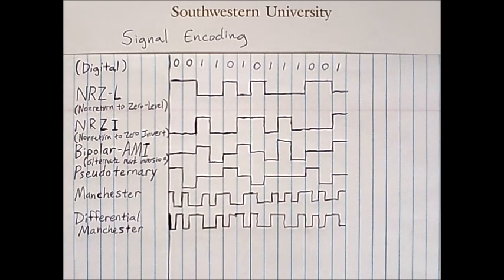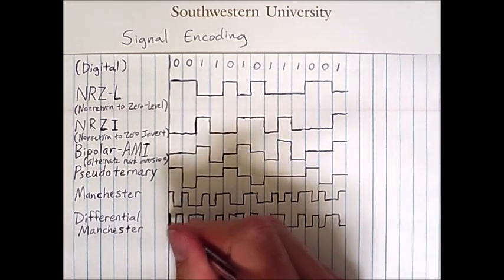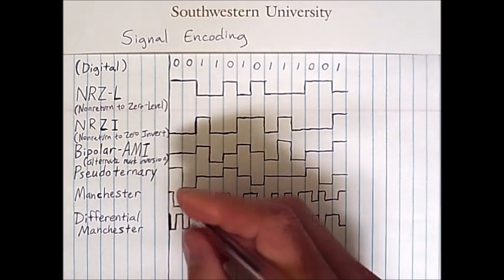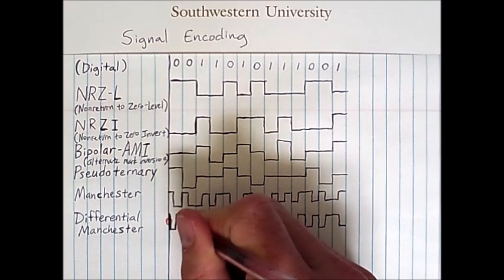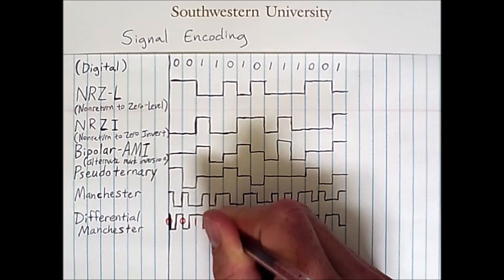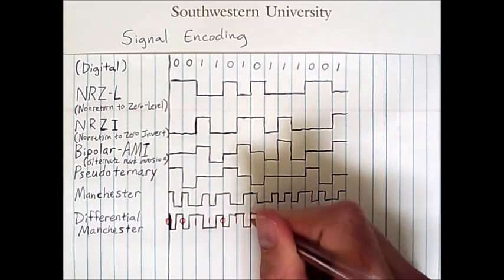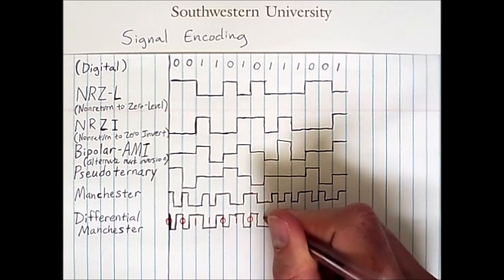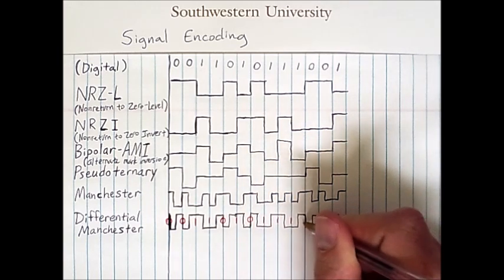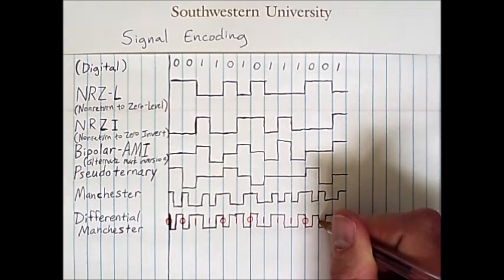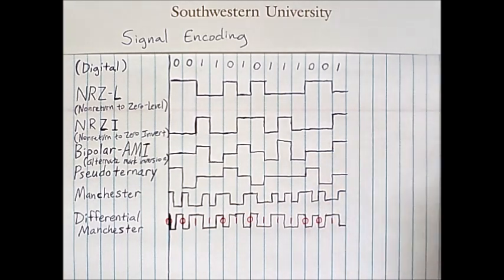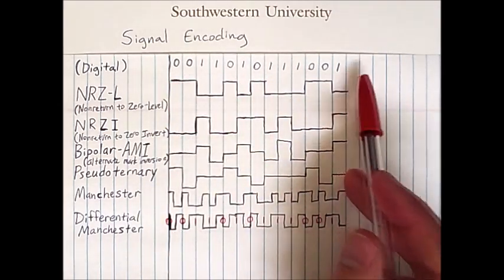To drive home how to visualize differential Manchester: whenever there is a transition at the beginning of an interval we have a zero; whenever there is no transition at the beginning we have a one. Reading the encoded signal gives us: zero, zero, one, one, zero, one, one, one, one, zero, zero, one — which matches exactly the bit sequence we encoded.